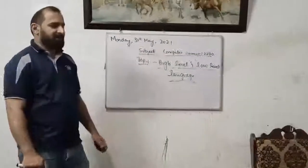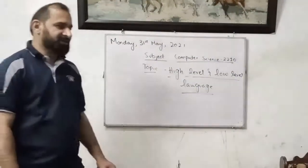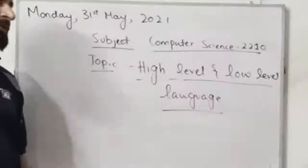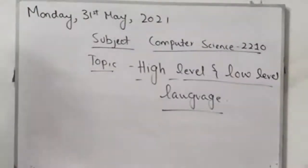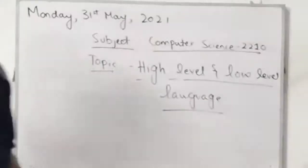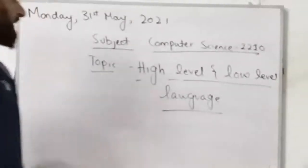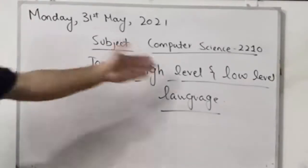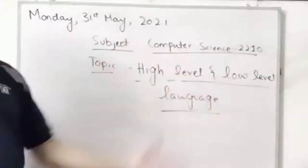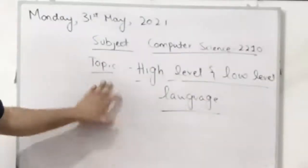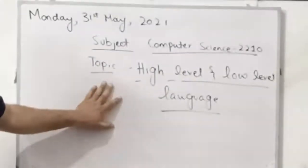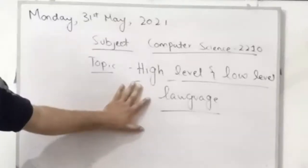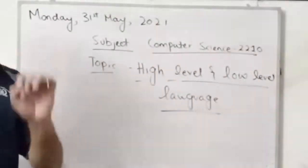Bismillah al-Rahman al-Rahim. Rabbi sharakh li sadri wa yassin li amri. Assalamu alaykum everyone. Today we are going to learn our subject — Computer Science 2.0. I'm teaching all levels. This is chapter number one: High Level and Low Level Languages, and it is the most important chapter.